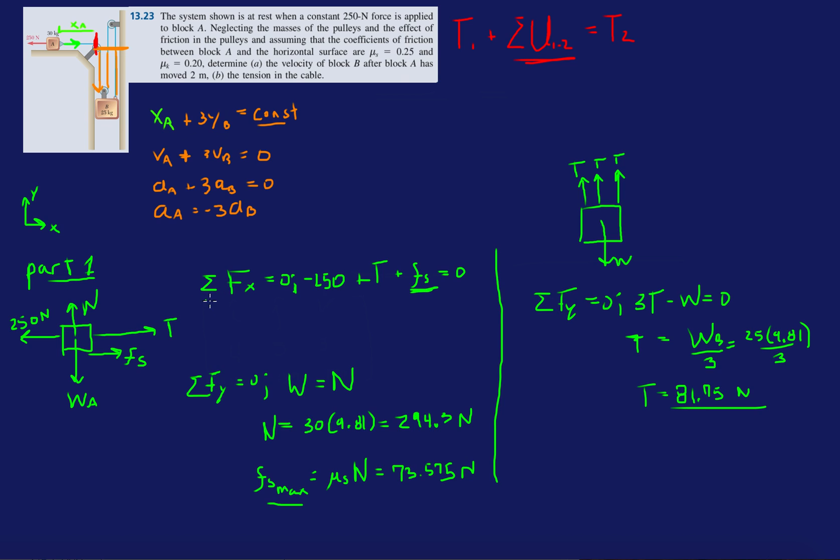So that's the tension going through this string. Now we look at going back to the first equation that we did, the x equation for block A. Now we have that F_s. Moving everything else to the right hand side of the equation we have T minus tension. We know tension, we just found tension is 81.75 newtons, so we're going to do 250 minus 81.75 to get 168.25.